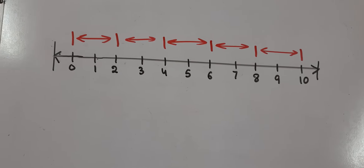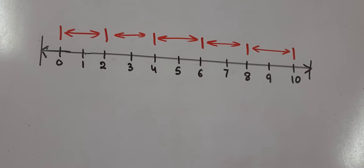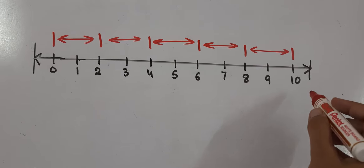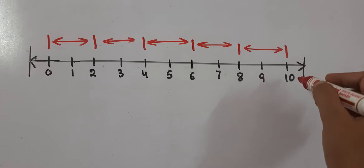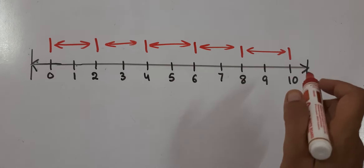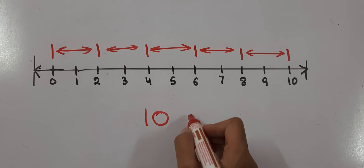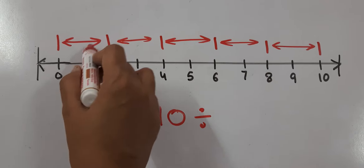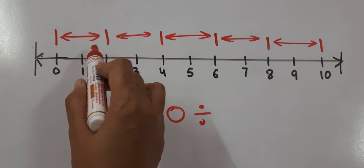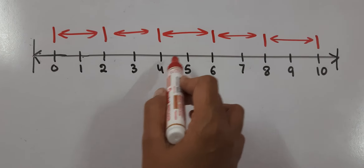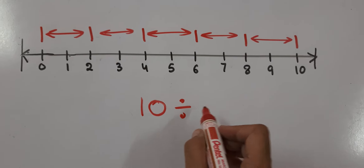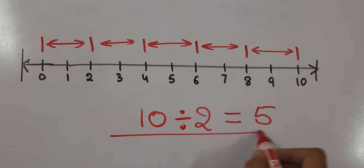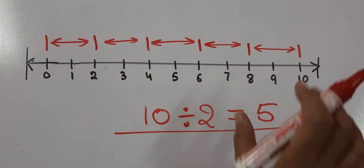A number line is given and we have to write a division sentence for it. First we will see how many sections this number line is divided into — it is divided into 10 sections. These 10 sections have 2 numbers in each group. So we will divide 10 by 2, and our answer will be 5, since 2 fives are 10. This will be our division sentence for the given number line.